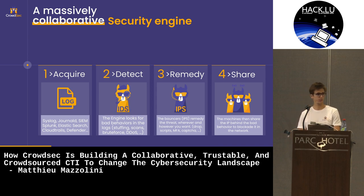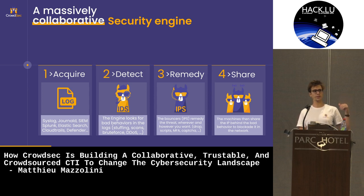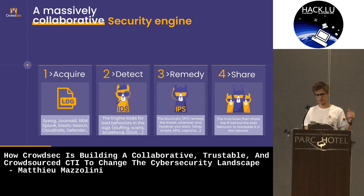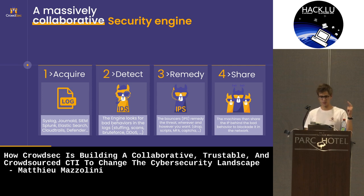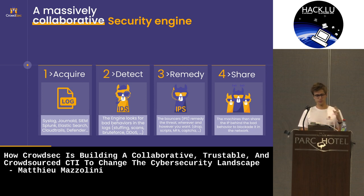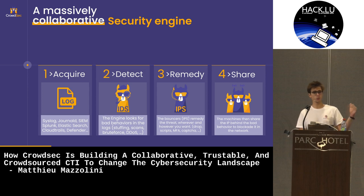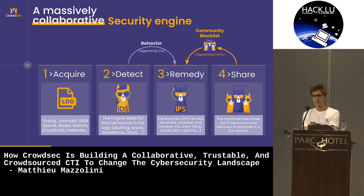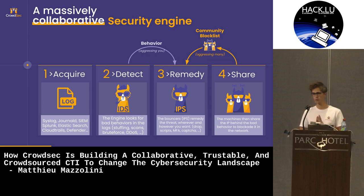This software is developed in Golang. It's released under an MIT license, and its operation is really simple — four steps. It acquires logs, then it detects malevolent behavior based on attack patterns such as credential stuffing, brute force, DDoS, and anything described in scenario files. You then take an action — for example, send a notification to your SOC team, write a rule in a firewall automatically, or send a captcha for a web-based account. The fourth step is that the offensive IP is then shared with the CrowdSec network, where IPs are sorted, contextualized, enriched, and redistributed to the network in the form of the community block list.